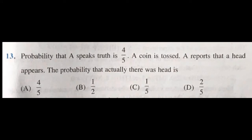Look at question number 13. It says probability that A speaks truth is 4/5. A coin is tossed, A reports that a head appears, and you have to find the probability that actually there was a head. Read the question once again and then you can clearly figure out that it is Bayes' theorem.